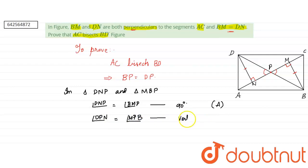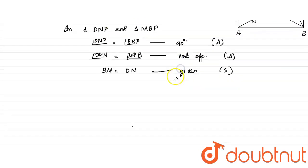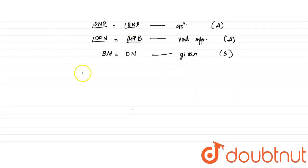And this is also an angle. Then we have already that is given in the question, that is BM equals DN. And this is given, and this is a side. Now we have by AAS axiom, this is AAS axiom.